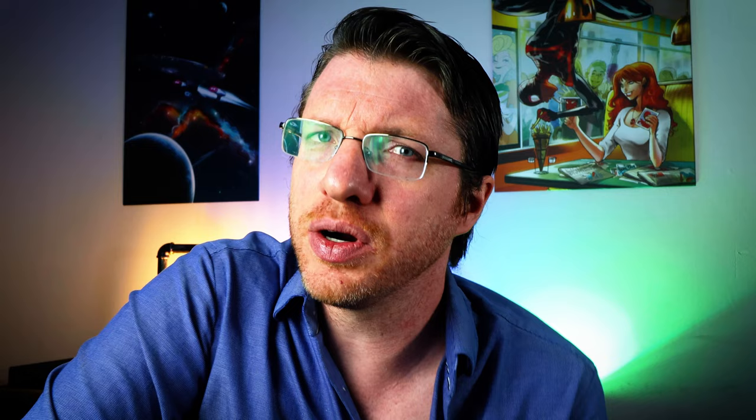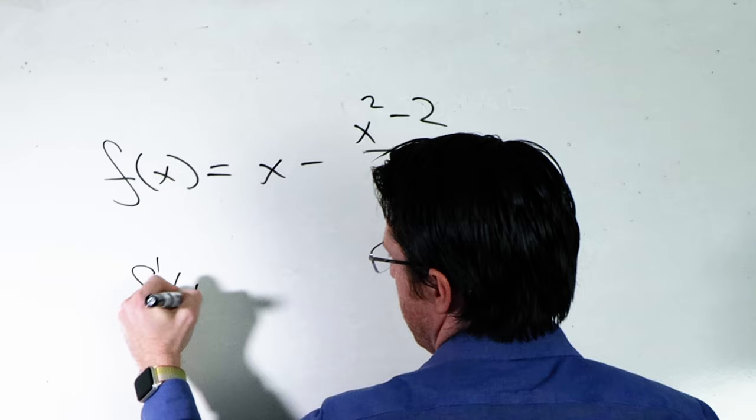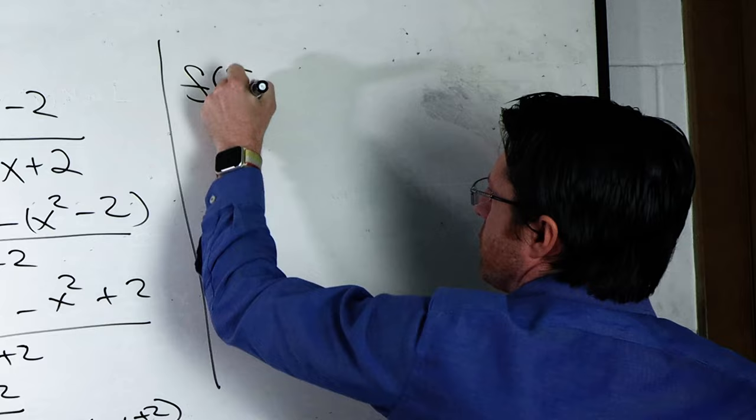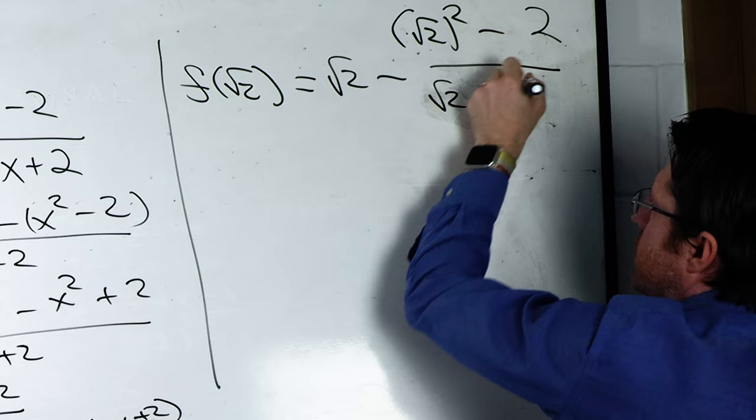Rudin takes a different approach, but at its heart, it's not too different. Rudin uses this function f of x equals x minus (x squared minus 2) divided by (x plus 2). From a heuristic standpoint, this is a very good choice of function. First of all, if x is the square root of 2, then we see that f applied to the square root of 2 is equal to the square root of 2, which makes it a fixed point. Not that I'm admitting that the square root of 2 exists yet. We're not there at Rudin yet.